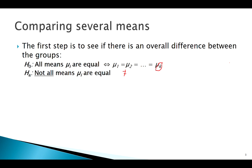Notice our null says the means are equal and our alternative says they're not equal. If we do end up rejecting the null, it tells us the means are not all equal — but it won't tell us exactly which mean is different. Is one different from the others, or is a collection of them different from another collection? Once we decide to reject, we have to follow up and figure out exactly what's going on with the means.